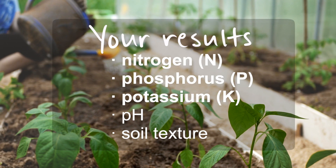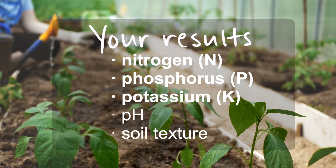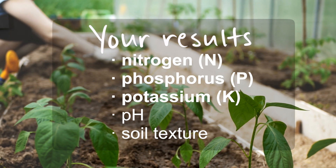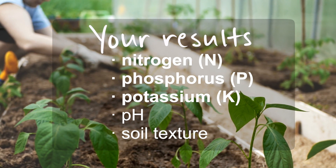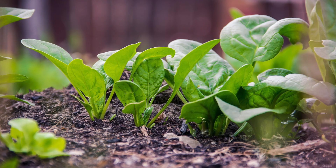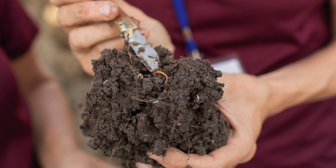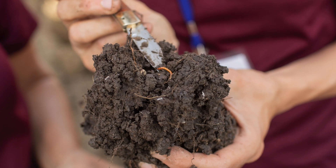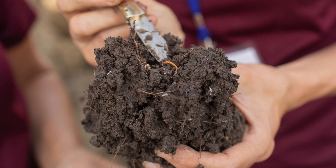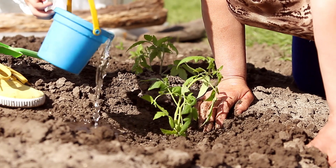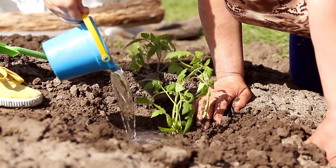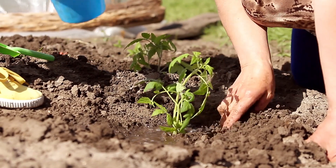The three nutrients your plants need the most of are nitrogen, phosphorus, and potassium. Let's start with your nitrogen levels. Nitrogen helps promote leafy growth in the plant. Interestingly, we don't actually measure nitrogen directly. Instead, we measure the percentage of organic matter in the soil, which gives us our nitrogen. Organic matter is material that will break down over time and make nitrogen available to plants through that process of being broken down by organisms within the soil.